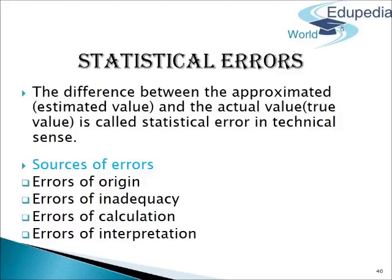Third — Errors of Calculation: Such errors arise because of wrong arithmetic calculations, clerical errors, arithmetic slips, omitting some figures, considering wrong values, or making wrong totals by the respondent or investigator. The last error — Errors of Interpretation: Such errors are committed by statisticians when misinterpreting the data.